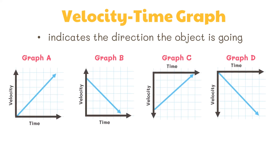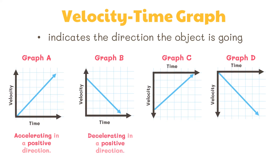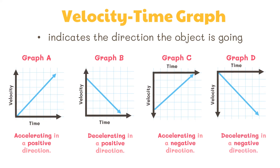Take a look at the following graphs. In graph A, the object is accelerating in a positive direction. The object in graph B is decelerating in a positive direction. Graph C shows an object accelerating in a negative direction. And in graph D, the object is decelerating in a negative direction.